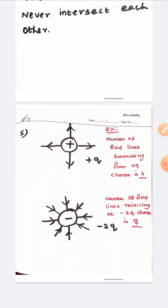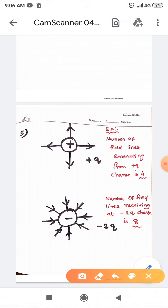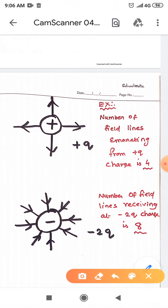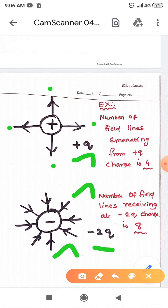The last property: the number of electric field lines that emanate from a positive charge or end at a negative charge is directly proportional to the magnitude of the charge. For example, from a plus Q charge there are 4 electric field lines emanating. For a minus 2Q charge, the magnitude is doubled, so there are 8 field lines.